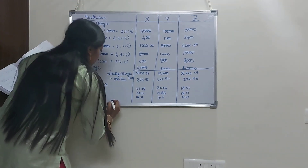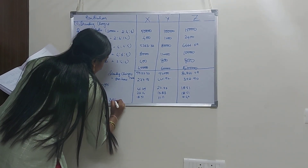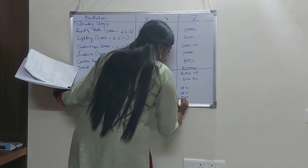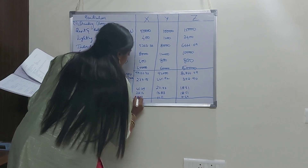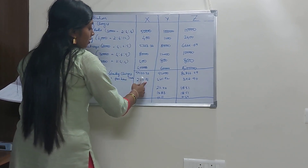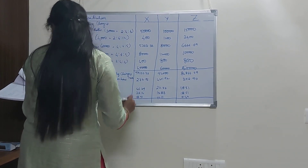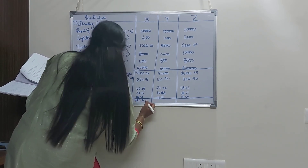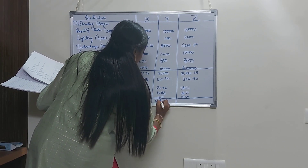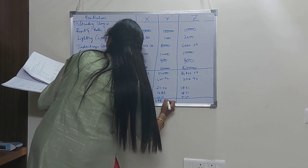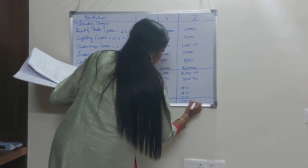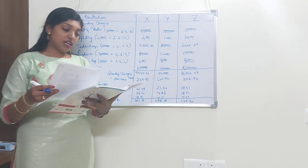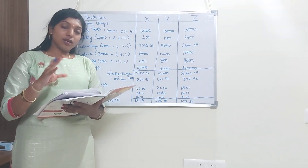Next, machine hour rate. We total all four items and the end result would be machine hour rate. So the machine hour rate — 273.76 plus the rest of the amount — stands at 361.70 for X, 478.68 for Y and 437.32 for Z.